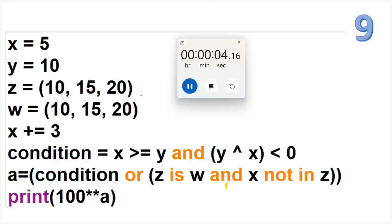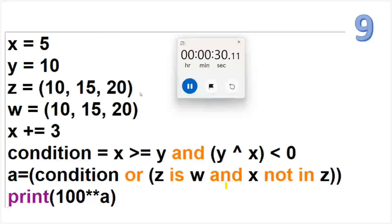From one to seven, we have the seven main operators in Python, and I gave a question on each of those. Then from eight, nine, and ten, these are the combination questions. I wanted to give you the exposure of how to handle combined operators — what would be their precedence, what would be their associativity rule — which one to solve first and which one later. This is what the ninth question covers.